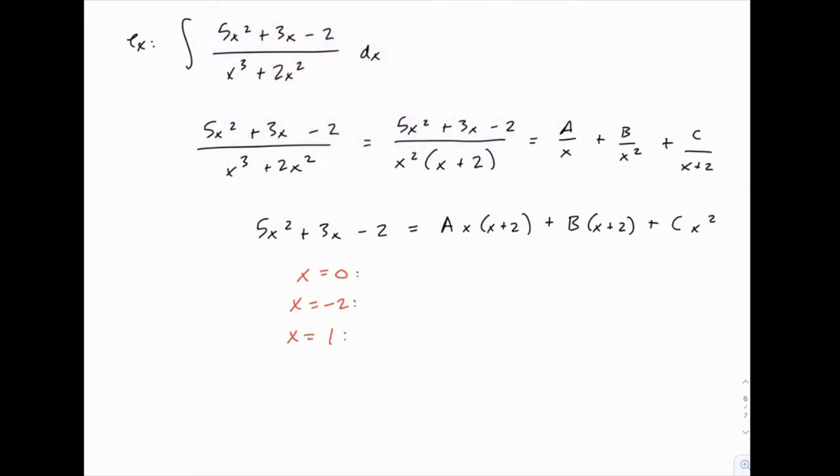When we do this, if x = 0, the left-hand side just equals -2, and then on the right-hand side, anything that has a factor of x will zero out. So the first and third terms are going to both be 0, which just leaves B × 2. So if -2 = B × 2, B just equals -1.